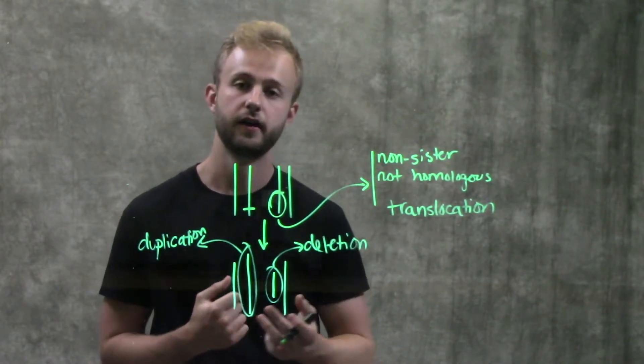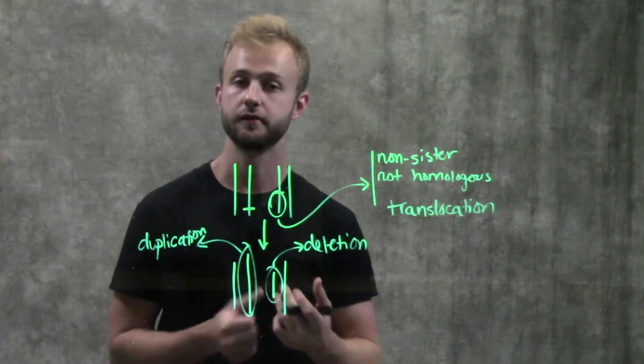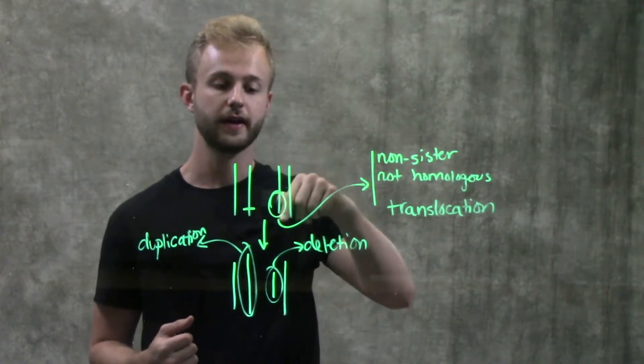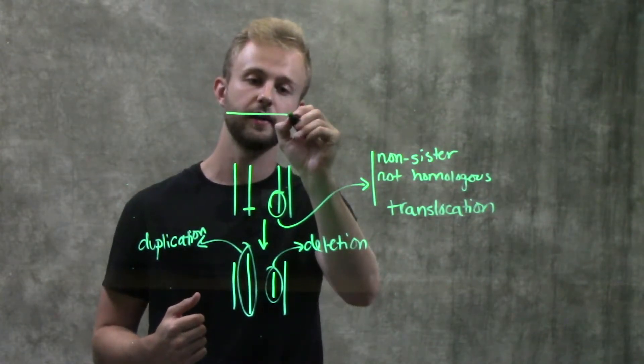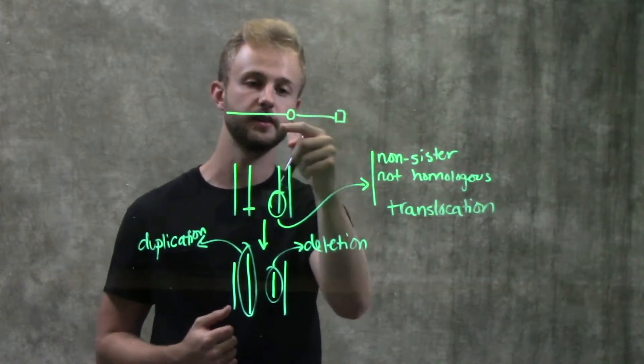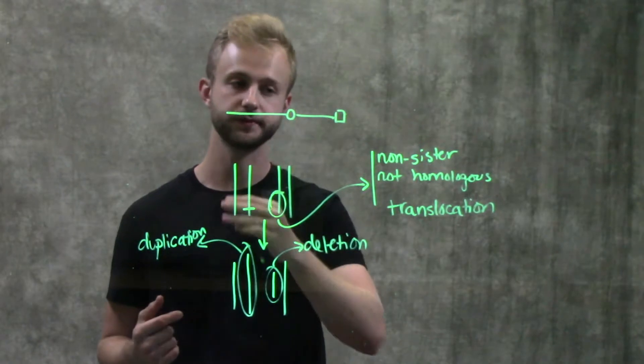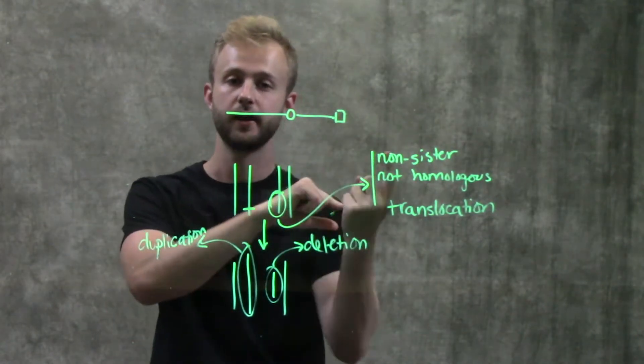The last kind of change in chromosome structure that we're going to look at is called an inversion. When we have this portion that's deleted, I'll draw it again up here. When we have this portion that's deleted right here between these two shapes, it can come off the chromosome and then flip and reattach.